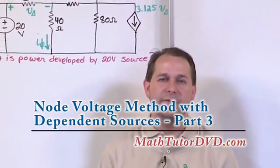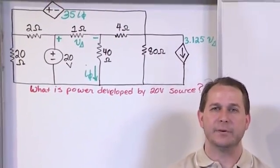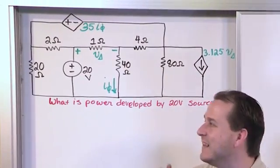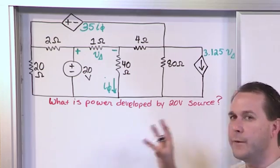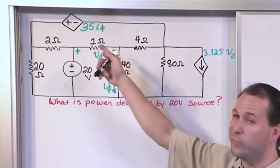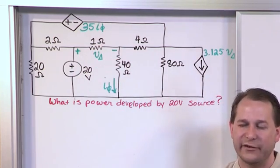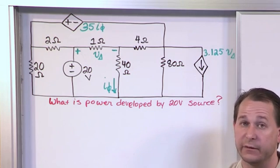I'm going to tell you right now this problem is going to take a little while to work, but it's a perfect example of a test problem because it tests your knowledge of node voltage really extensively and you get thrown the loop of the dependent sources in two different places. It's just a great test problem because it really flexes those muscles.